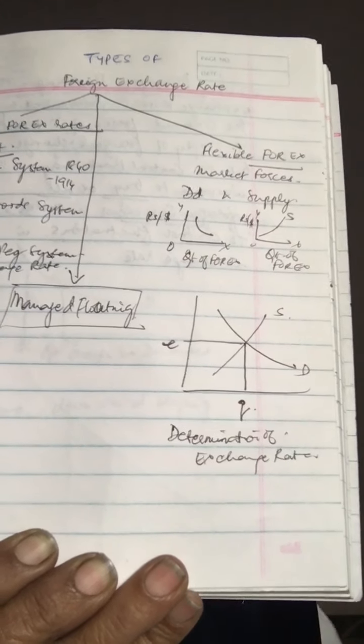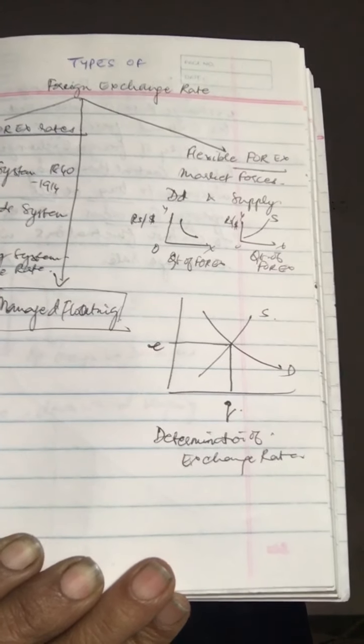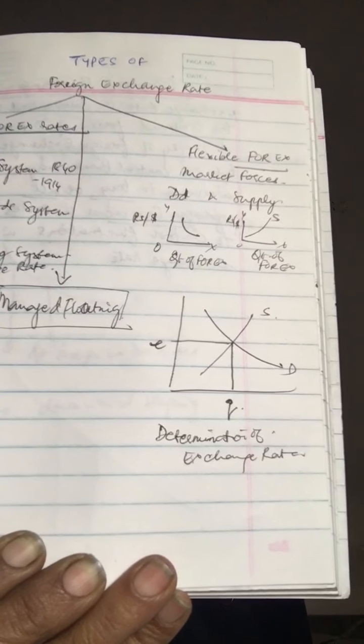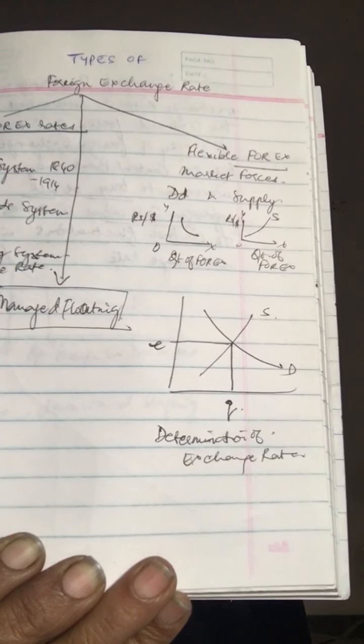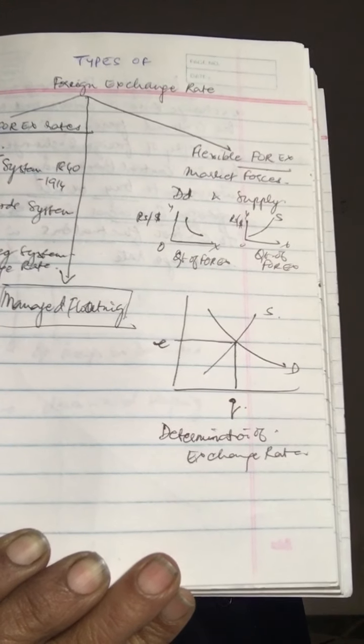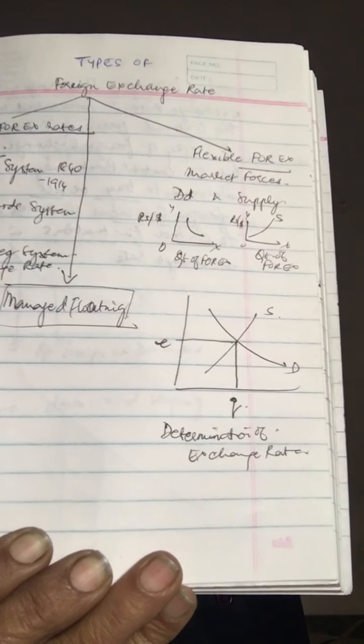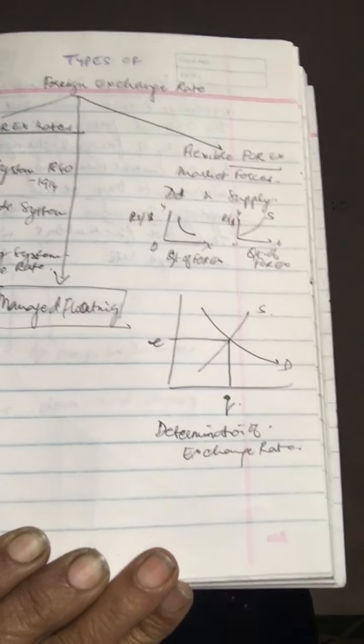Then we come to flexible exchange rate. The flexible exchange rate refers to a system in which exchange rate is determined by forces of demand and supply of different currencies in the foreign exchange market.